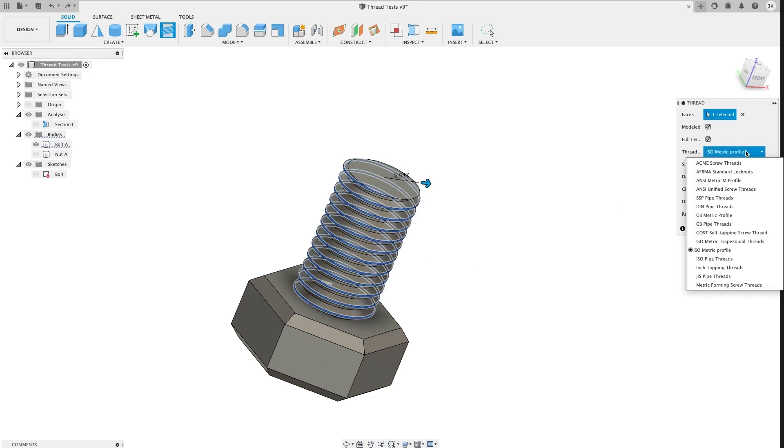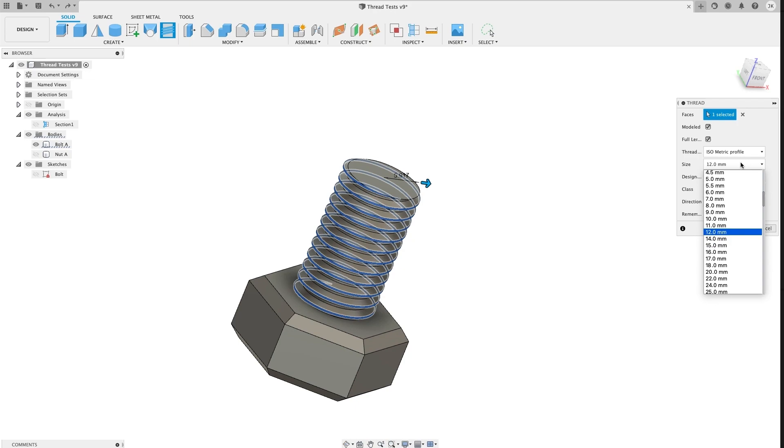I use ISO metric as my thread standard because they could theoretically be used with standard bolts. Although you'll see in a moment that that's a bit of a moot point. I also use the coarsest thread size I can get. This gives it a bit more chunk to work with.